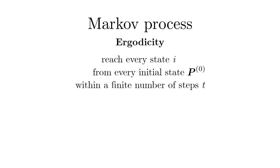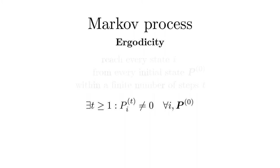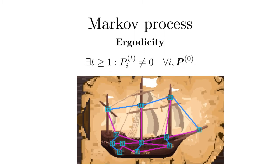We cannot avoid introducing at least one more definition: Ergodicity. A Markov process is ergodic if there is a non-zero probability for reaching every state from every other state in a finite number of steps. In the case of the rat it could be that there are certain disjoint areas on the ship between which the rat cannot switch.